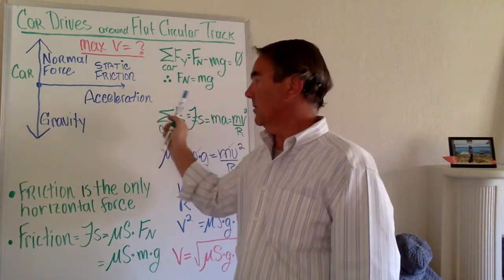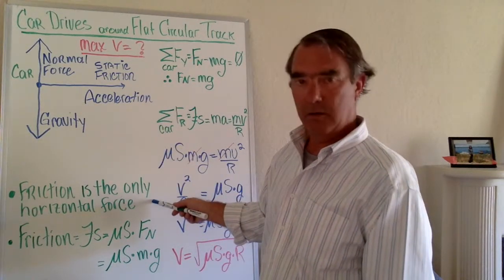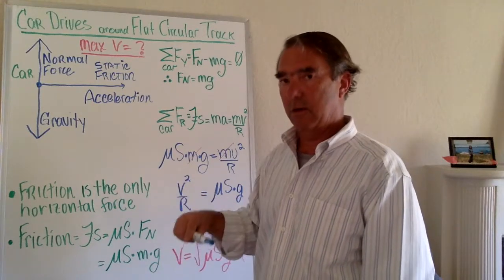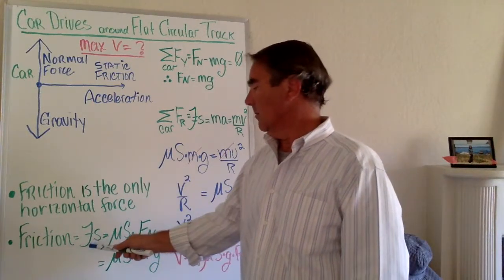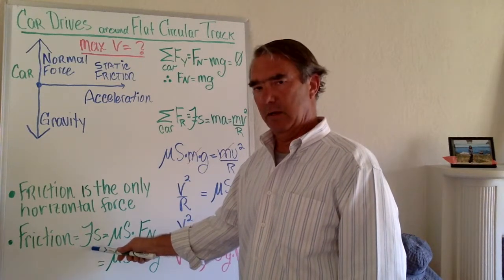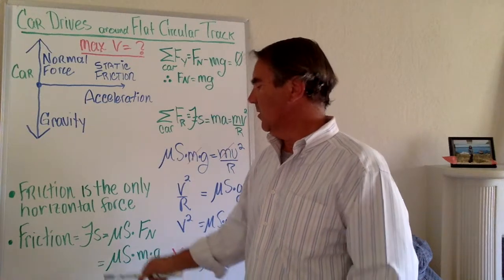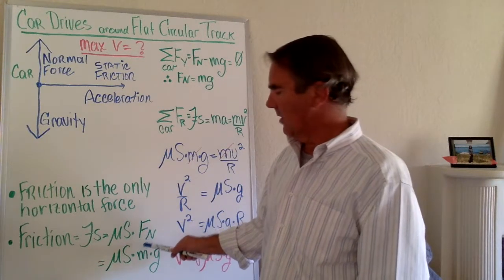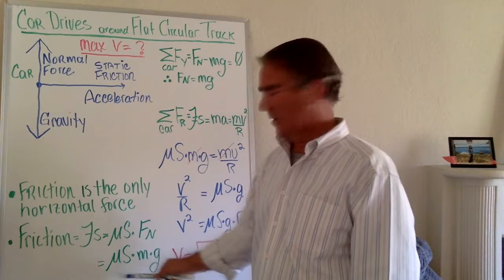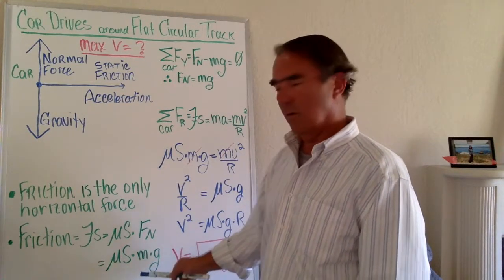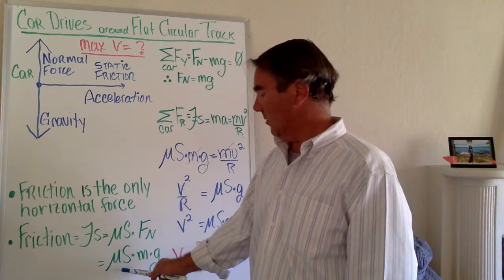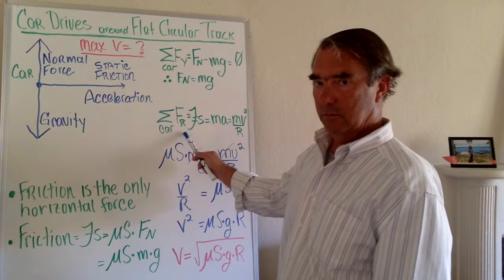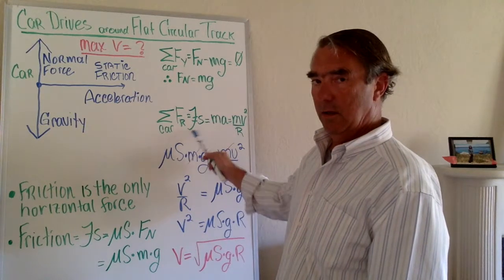Along the radial direction, friction is the only force in play. This is static friction, not kinetic friction — the car has not started to skid yet. Friction equals the coefficient of static friction times the normal force, which equals mu_s times mg.